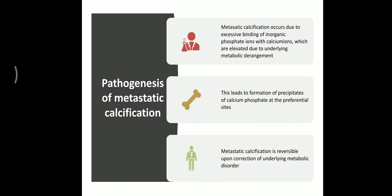Regarding pathogenesis of metastatic calcification: it occurs due to excessive binding of inorganic phosphate ions with calcium ions, which are elevated due to an underlying metabolic derangement. When calcium and phosphate ions bind together, this leads to formation of a precipitate of calcium phosphate at peripheral sites. Metastatic calcification is reversible upon correction of the underlying metabolic disorder.